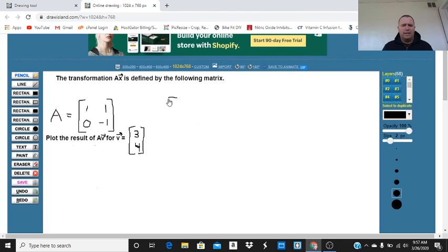So our first step, we're going to need to multiply A times V. So we have matrix 1, 1, 0, negative 1, and we're going to multiply it by the matrix 3, 4.